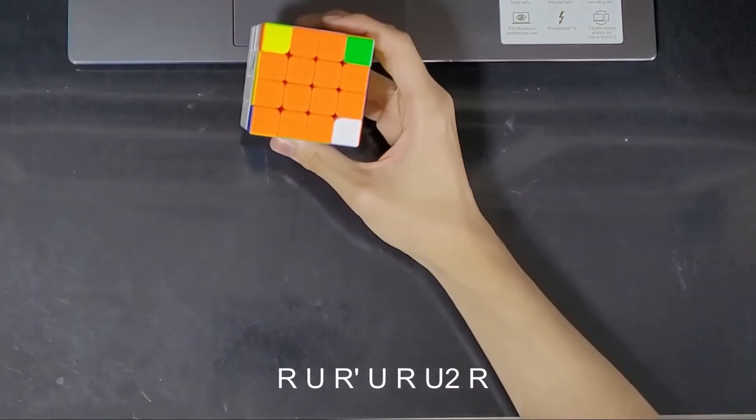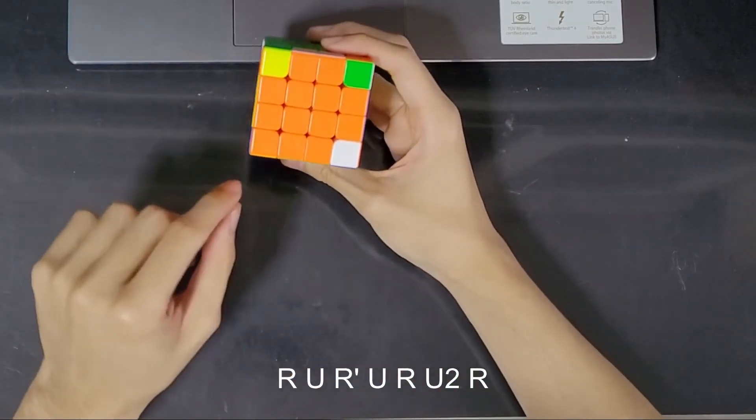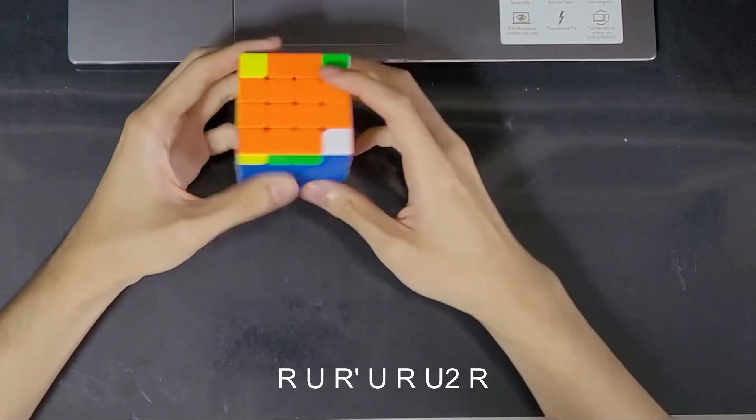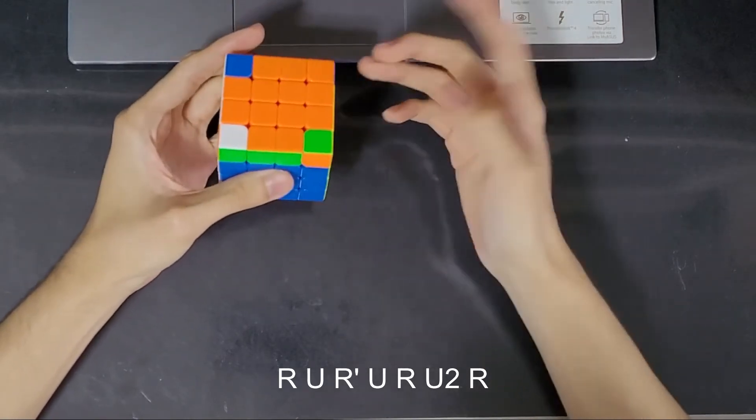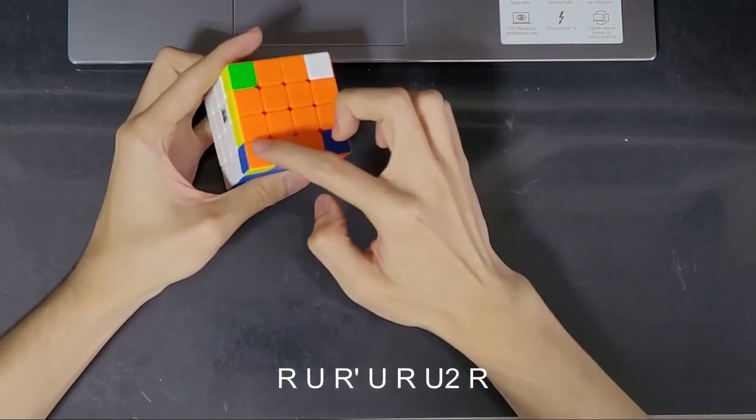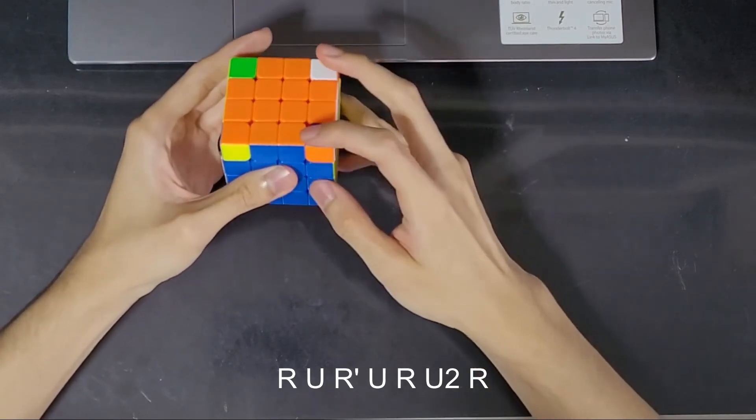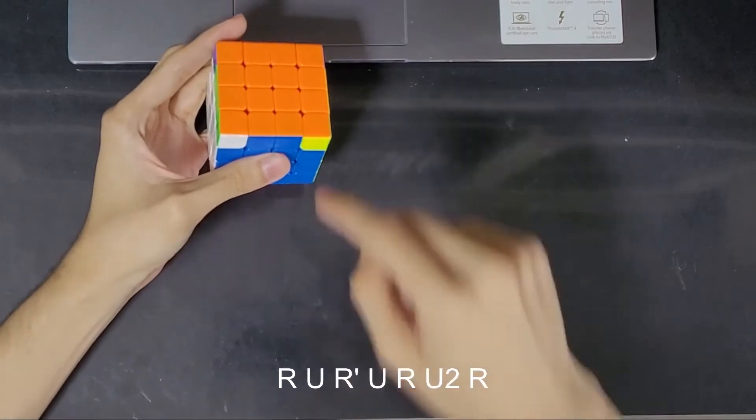And with that we are going to twist all the corners to the correct positions. So in this case I got one that is correctly flipped. So I am going to preserve that in the front left. And I am going to do this algorithm. Again I still have one that is correctly flipped. So I am going to preserve it here. And do the algorithm again. And now I have twisted all the corners.